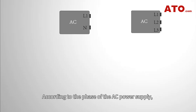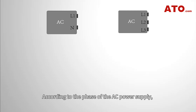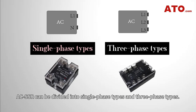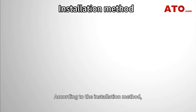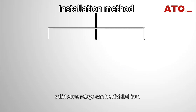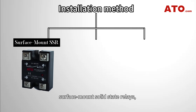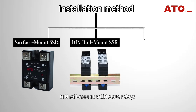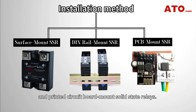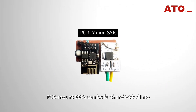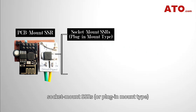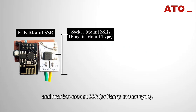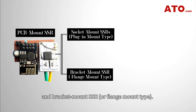5. Phase. According to the phase of the AC power supply, AC-SSR can be divided into single-phase types and three-phase types. 6. Installation Method. According to the installation method, solid-state relays can be divided into surface-mount, DIN rail-mount, and printed circuit board-mount solid-state relays. PCB-mount SSRs can be further divided into socket-mount SSRs (plug-in-mount type) and bracket-mount SSRs (flange-mount type).